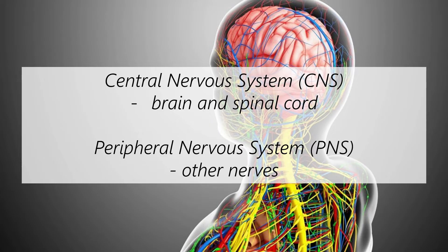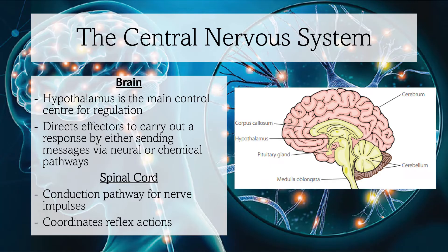The first is the central nervous system, which is composed of the brain and the spinal cord. The second is the peripheral nervous system, which is comprised of all other nerves throughout the body that are not part of the central nervous system.